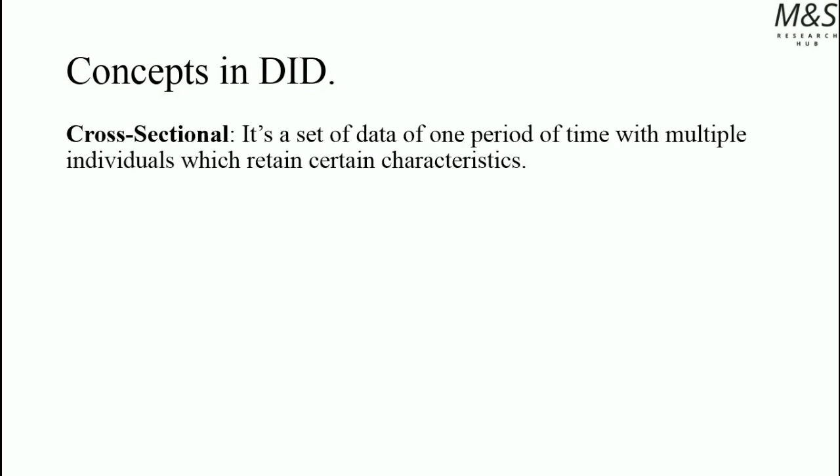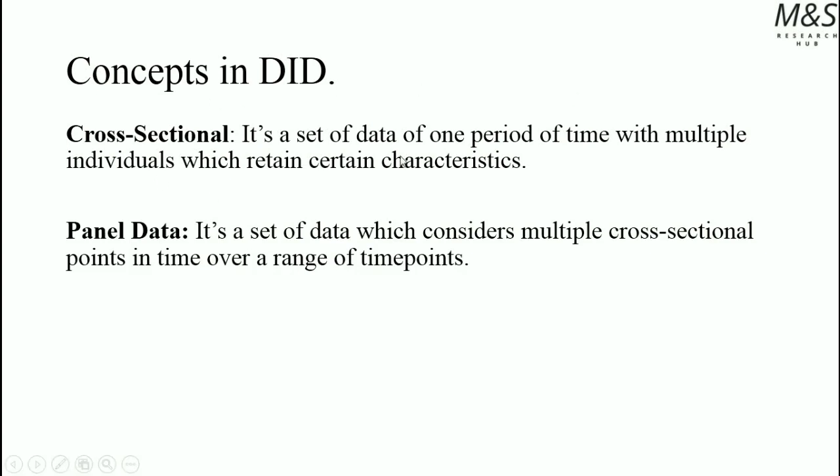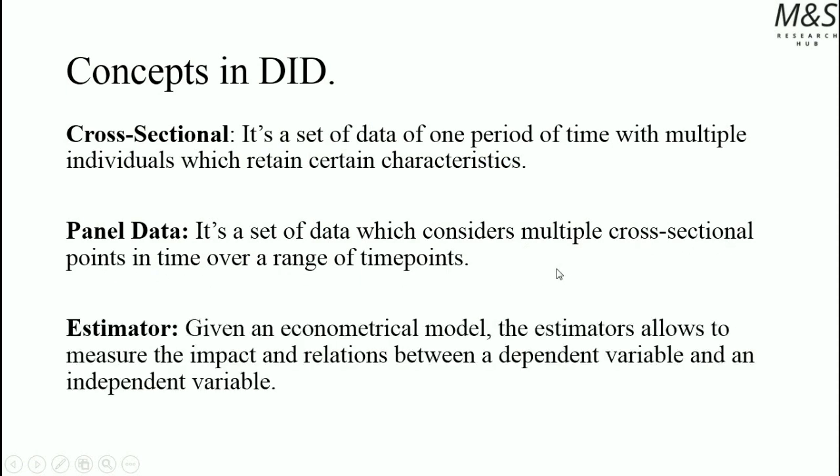More concepts in the difference-in-difference approach that are important to learn. Cross-sectional data is a set of data of one period of time with multiple individuals retaining certain characteristics, such as sex, age, years of education, and years of experience in the current job. Panel data can be described as a multiple conjunction of cross-sectional data — a set of data which considers multiple cross-sectional points in time. The estimator, since we're using the difference-in-difference approach related to regression frameworks, is defined as the measure of impact between a dependent variable and an independent variable given an econometric model.